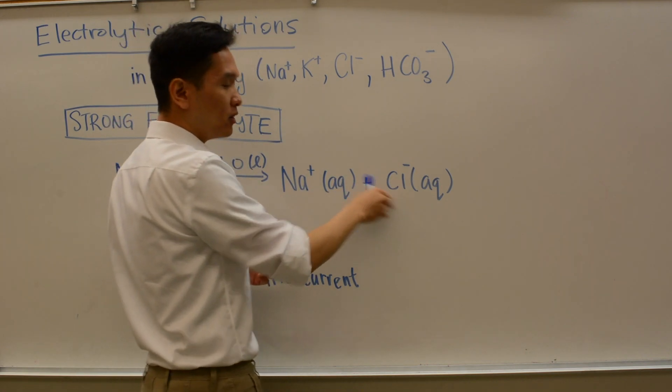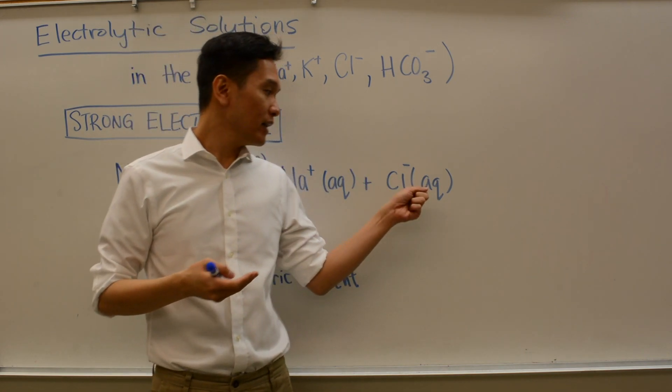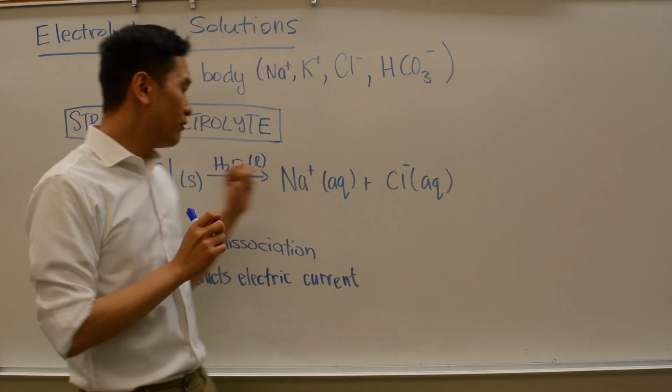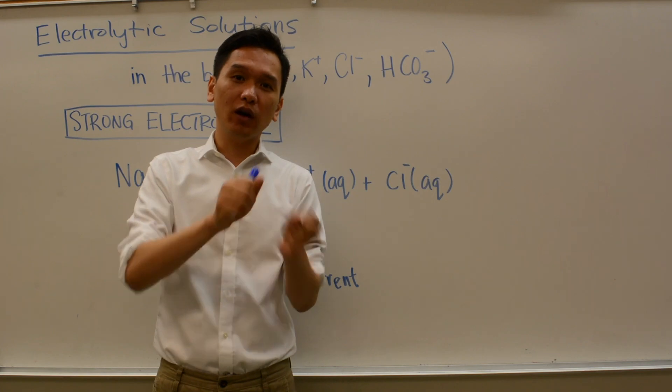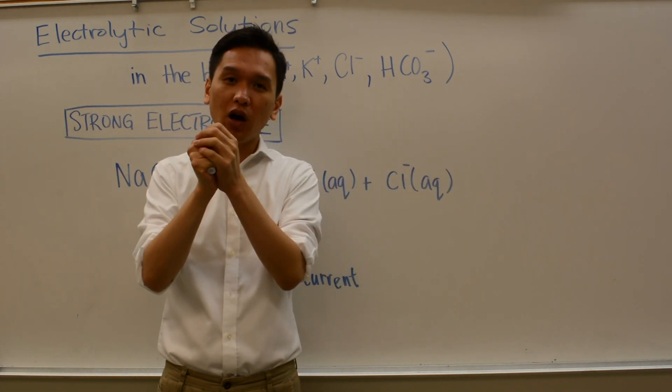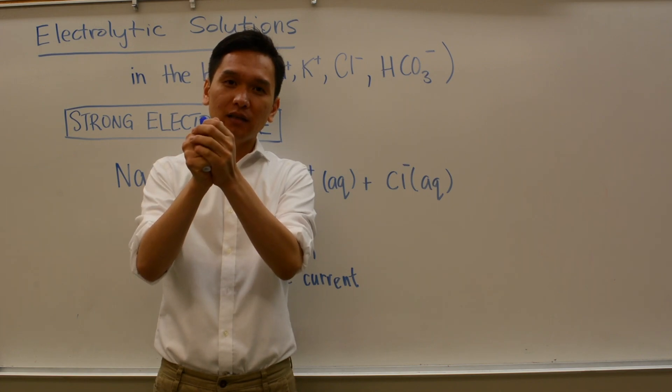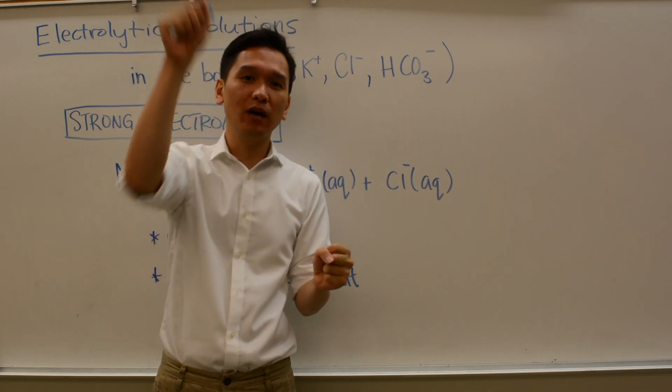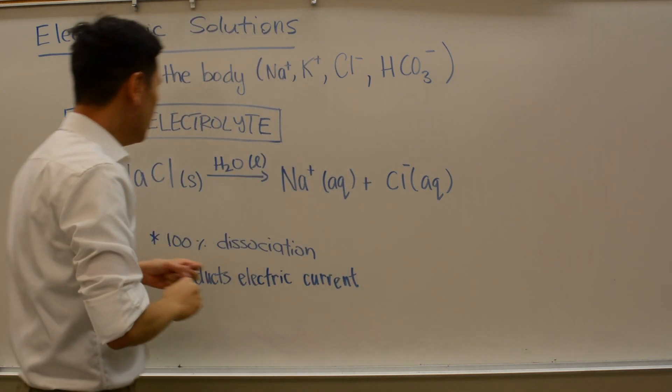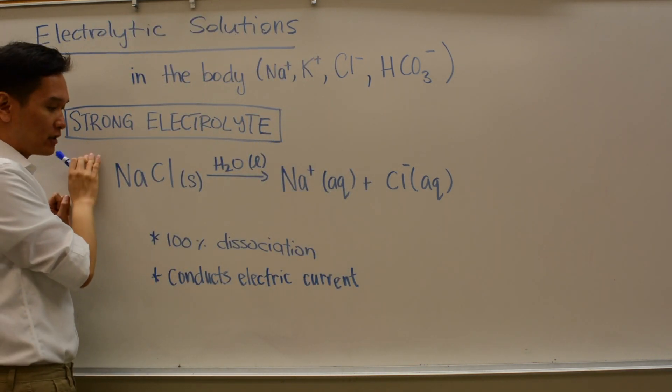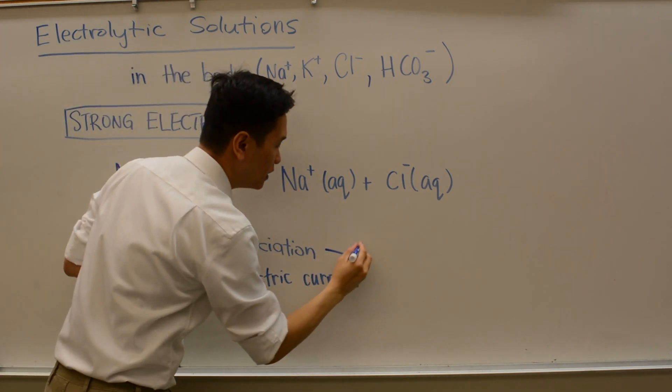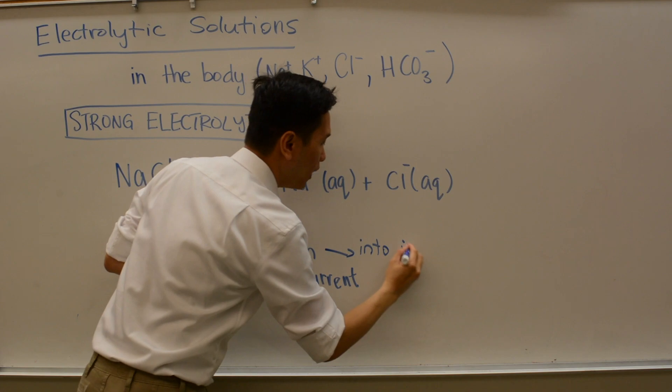Chloride negative anion is also surrounded by water. Whenever you have an ionic compound that dissolves completely 100% into sodium ions and chloride ions floating around, we call that a strong electrolyte because of the 100% dissociation into ions.